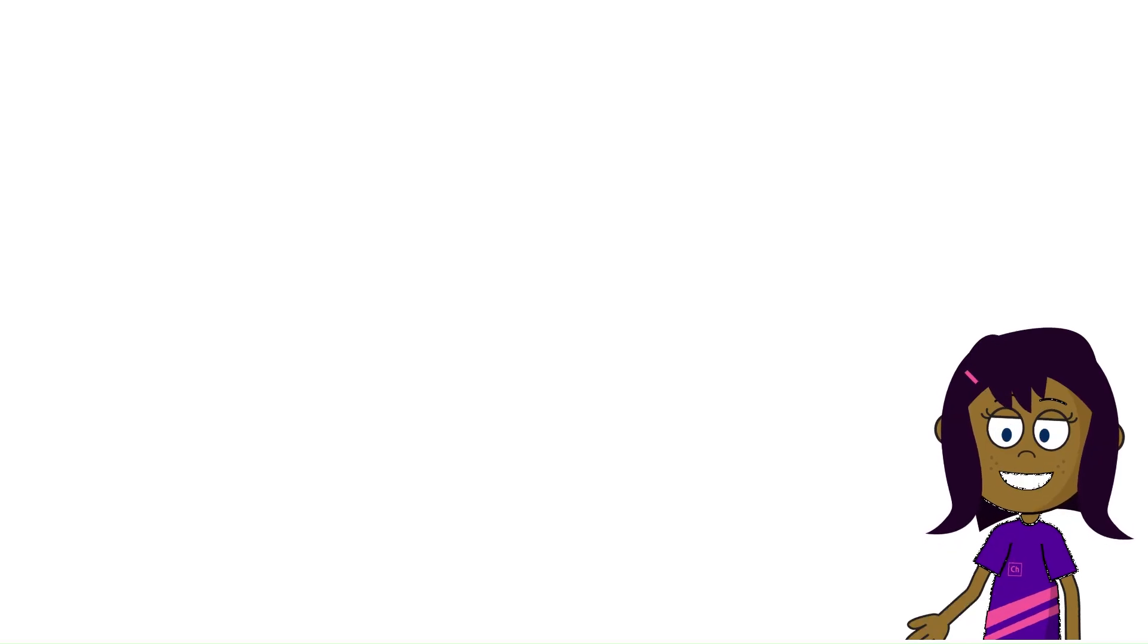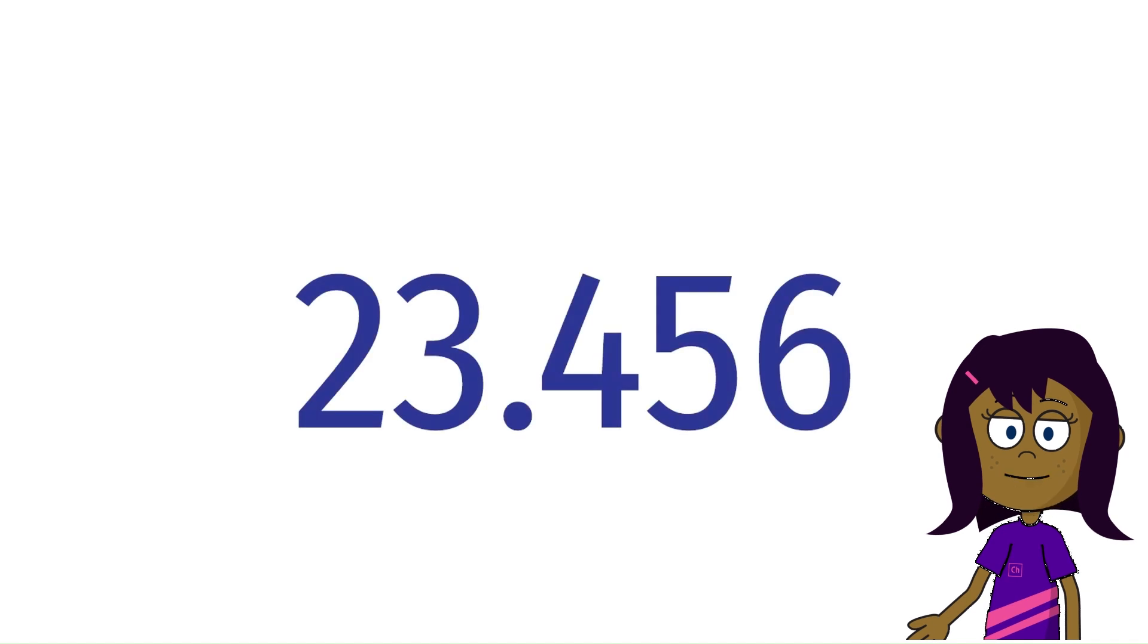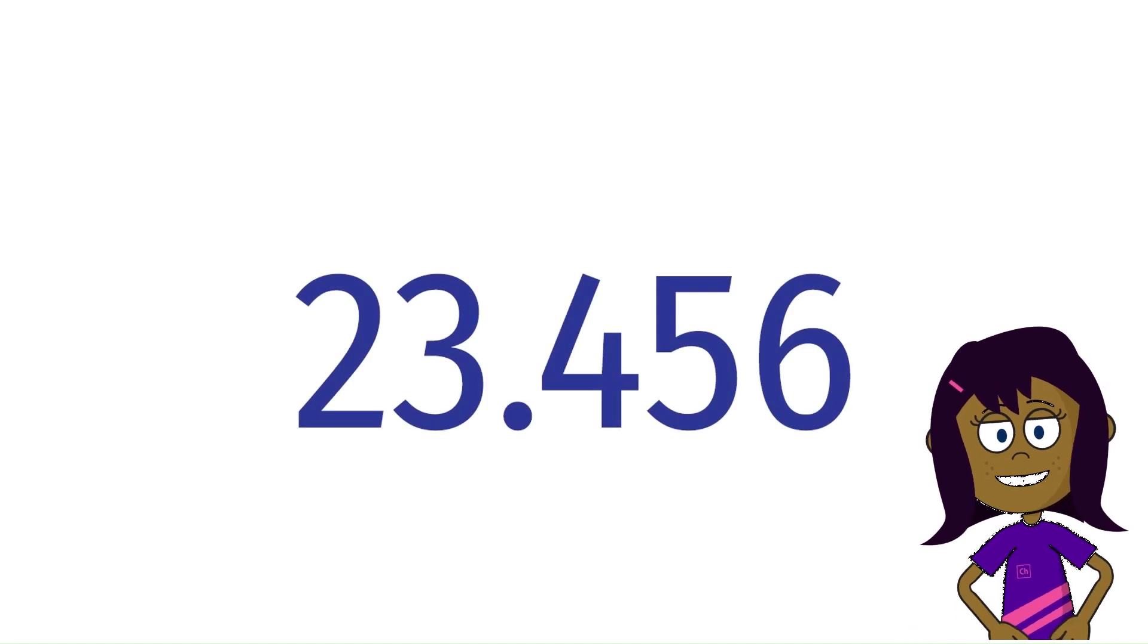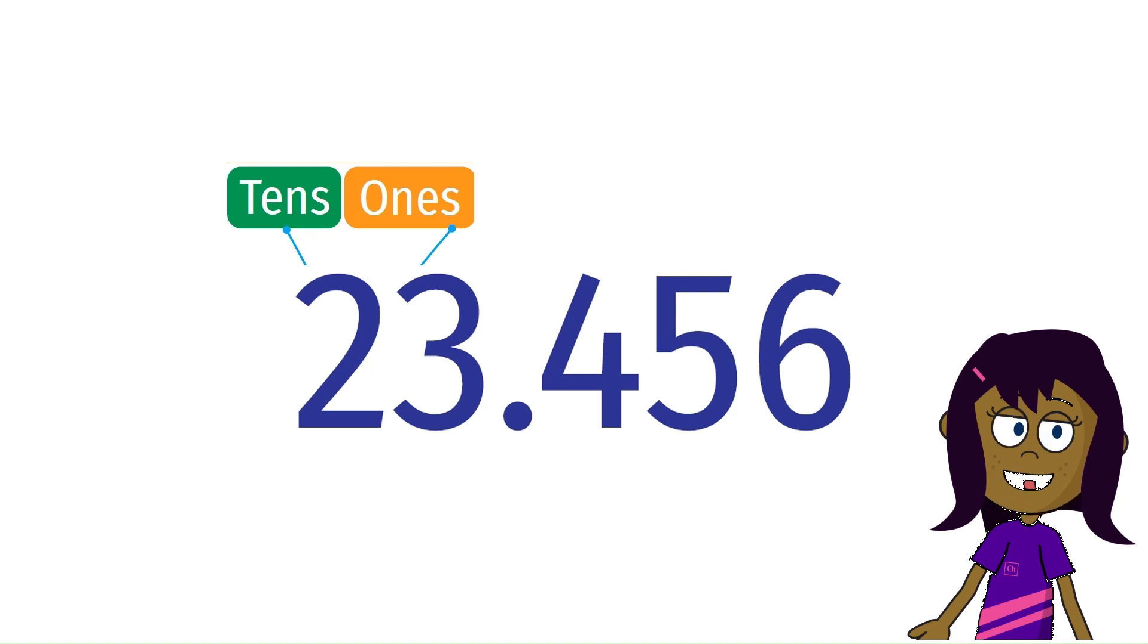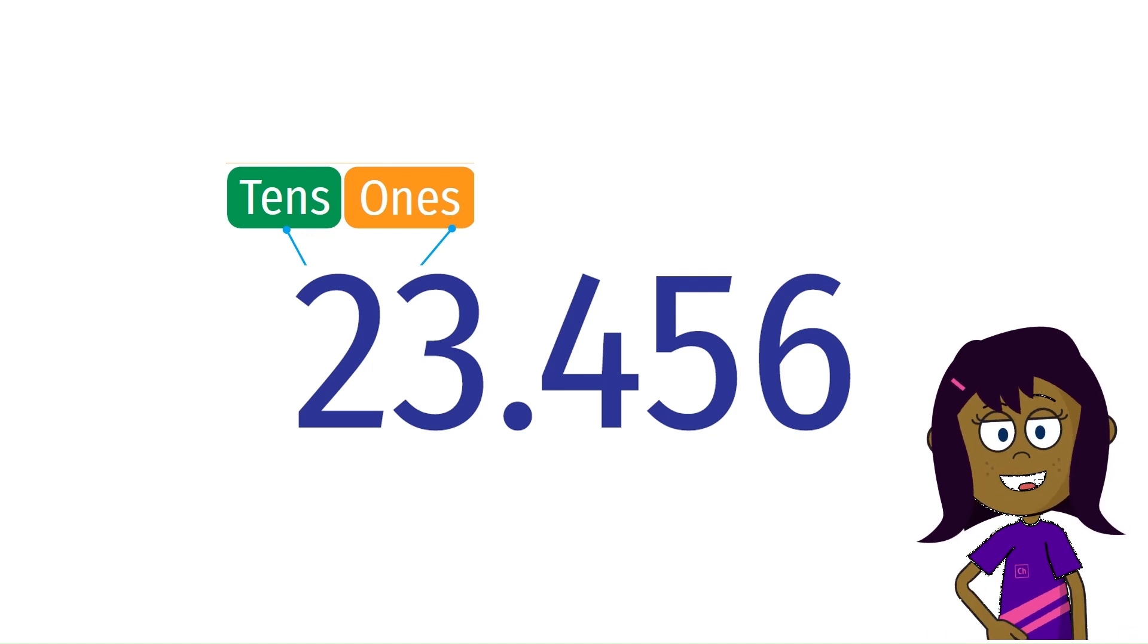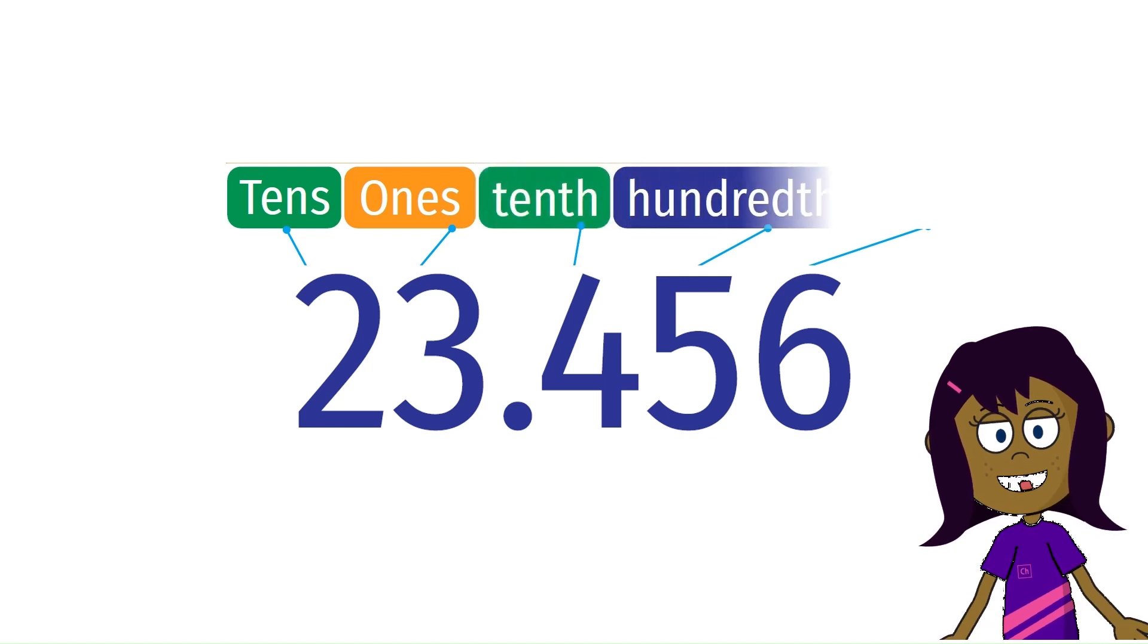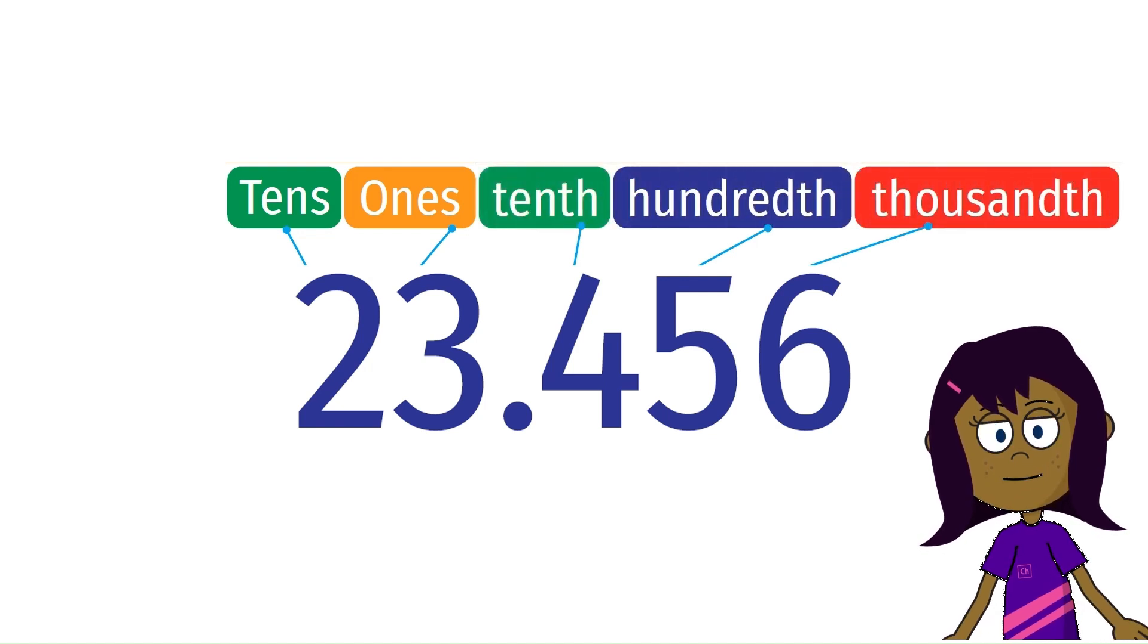Let us take the number 23.456. You have already studied ones and tens and you know how to locate such a number on the number line. On the right side of the decimal point we have four, five, and six. Four is on the tenths place, five is on the hundredths place, and six is on the thousandths place.